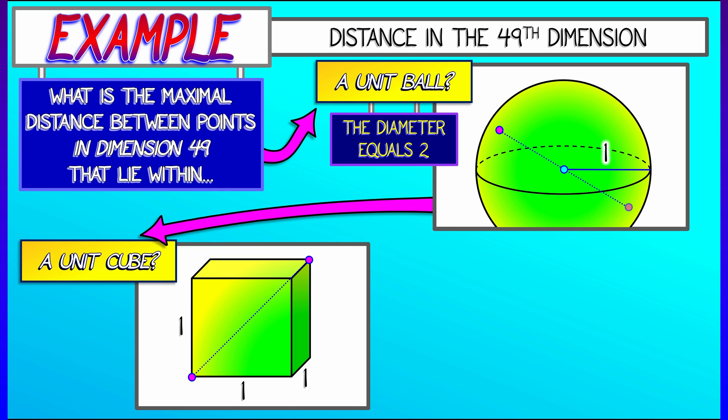Now, things get a little different when you move to a unit cube. So think of a cube where all of the sides are of length one. In 2D, that would be a square. In 3D, a cube. In 49D, what is the maximal distance between two points? That is the corner-to-corner distance.